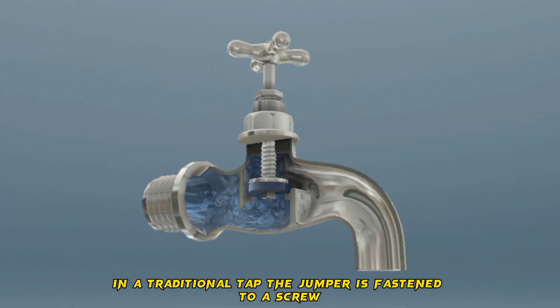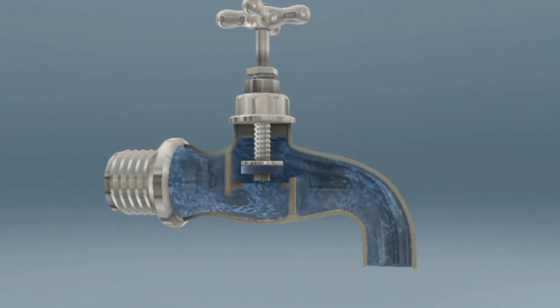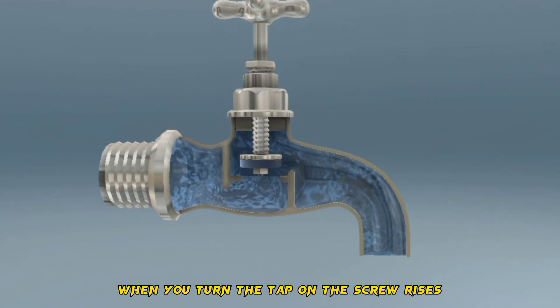In a traditional tap, the jumper is fastened to a screw together with a rubber washer. When you turn the tap on, the screw rises,